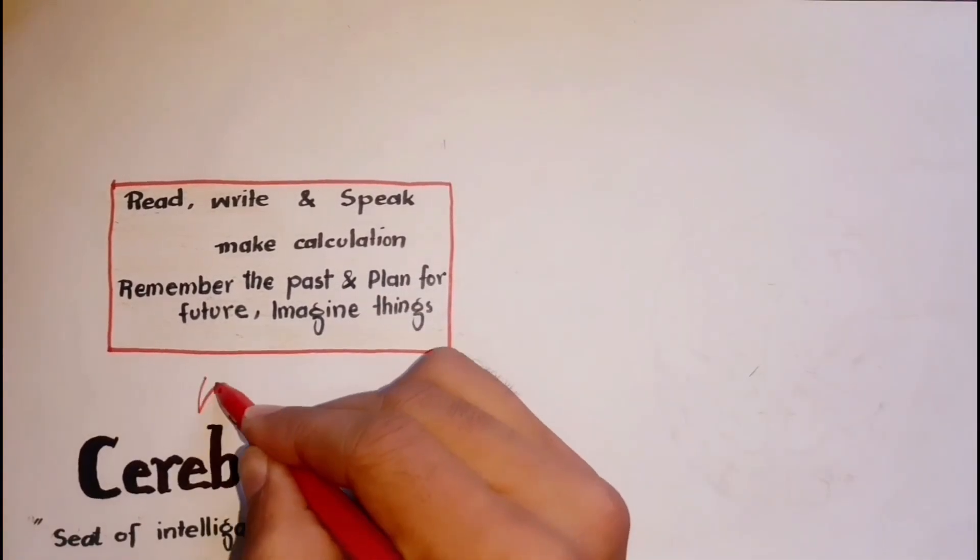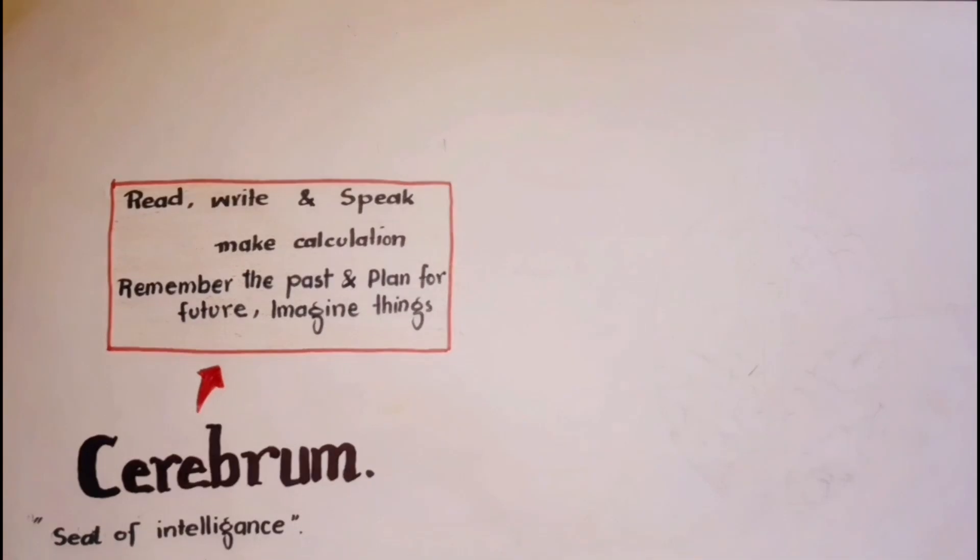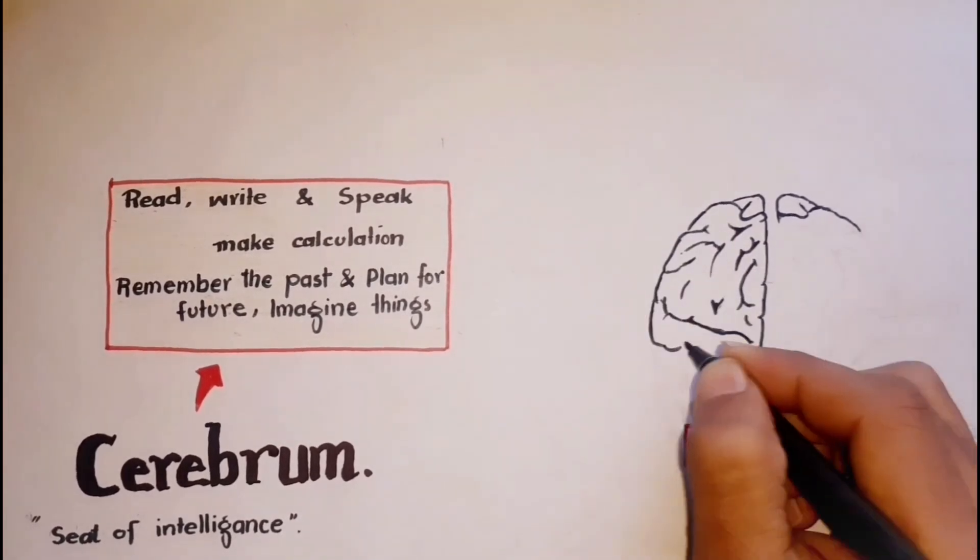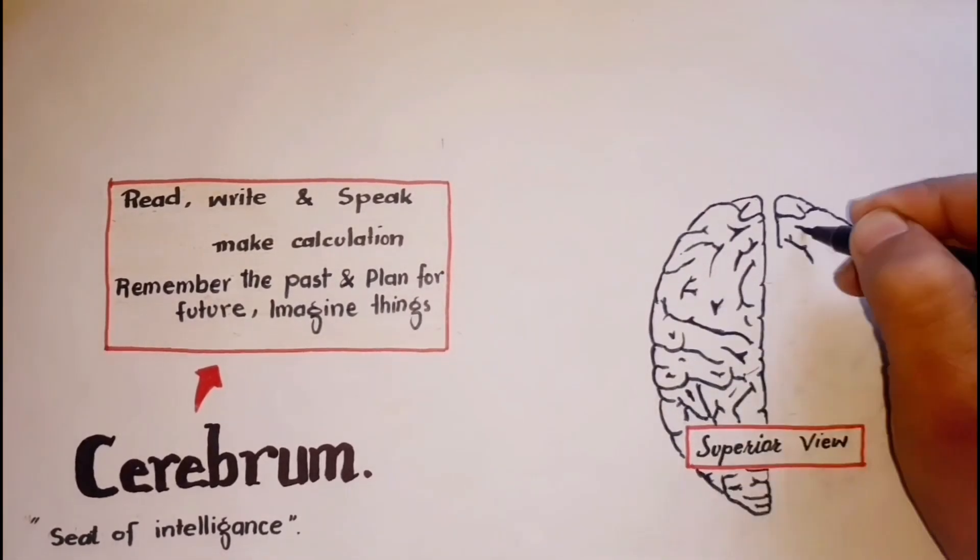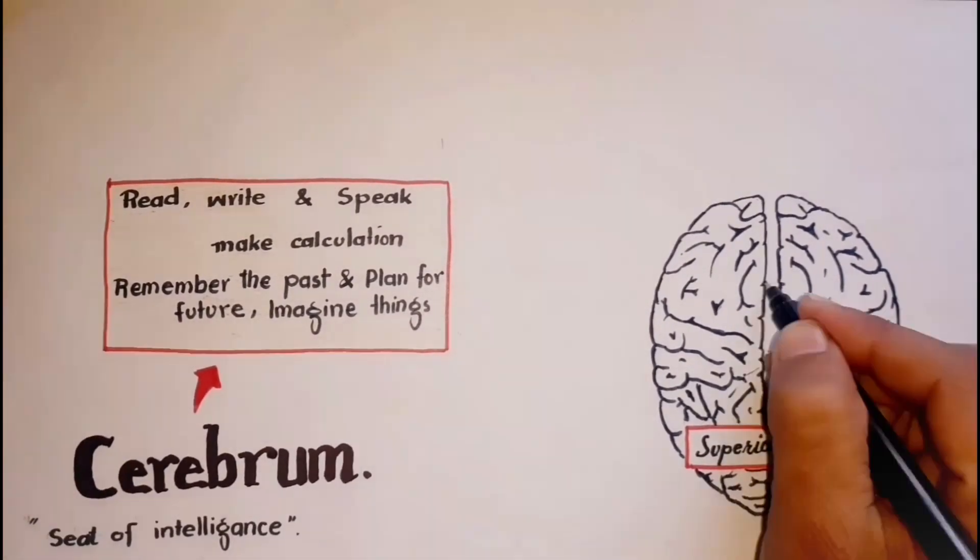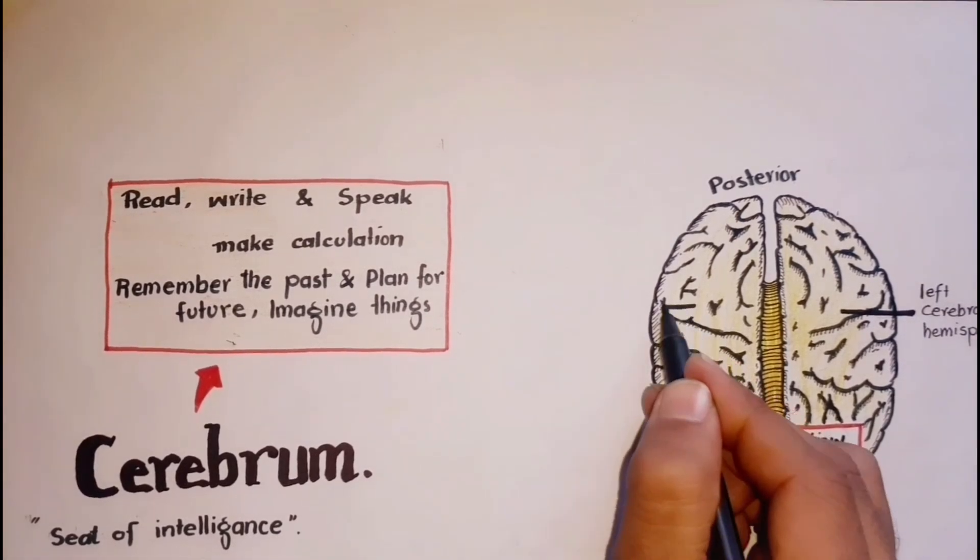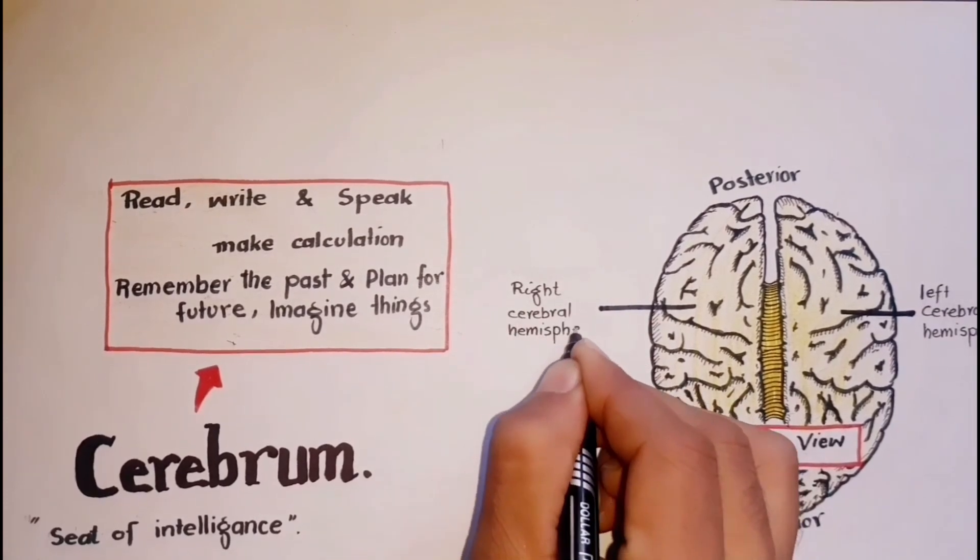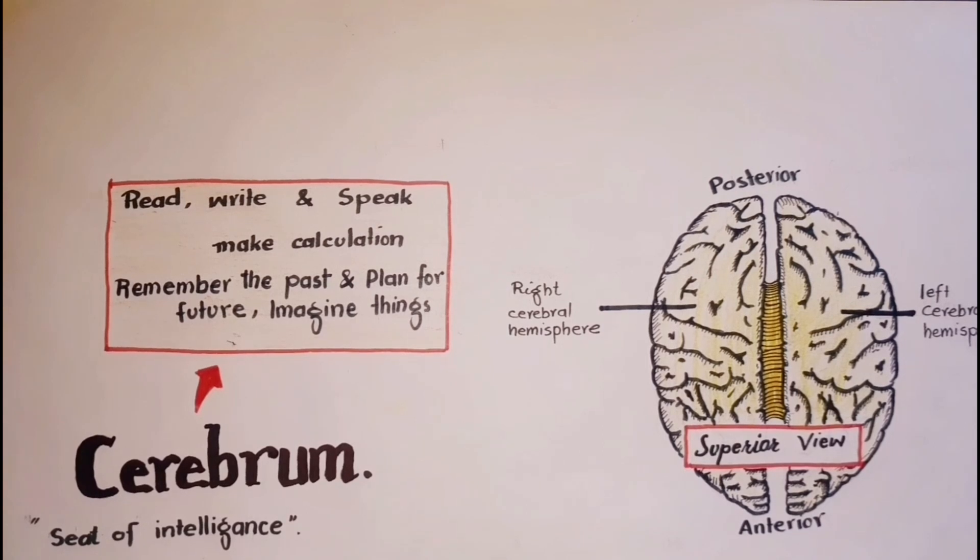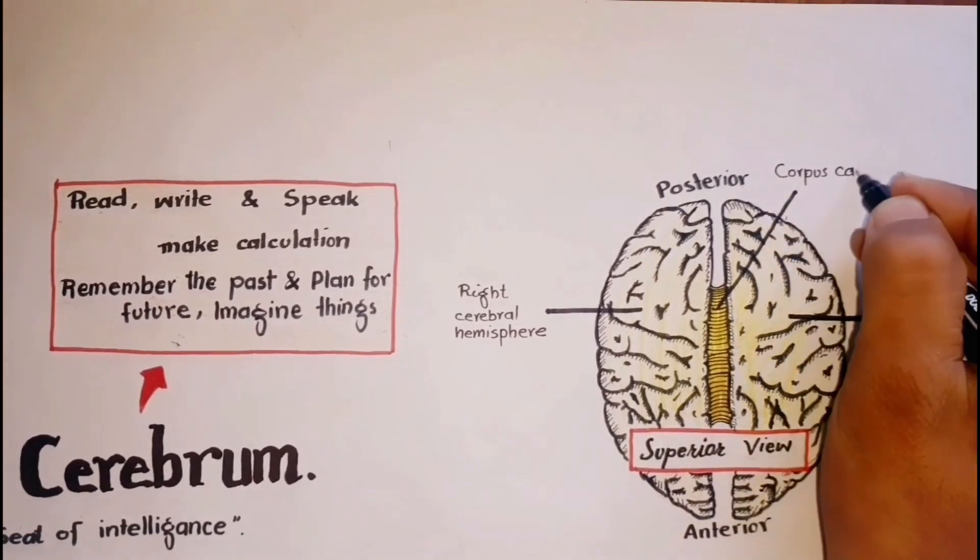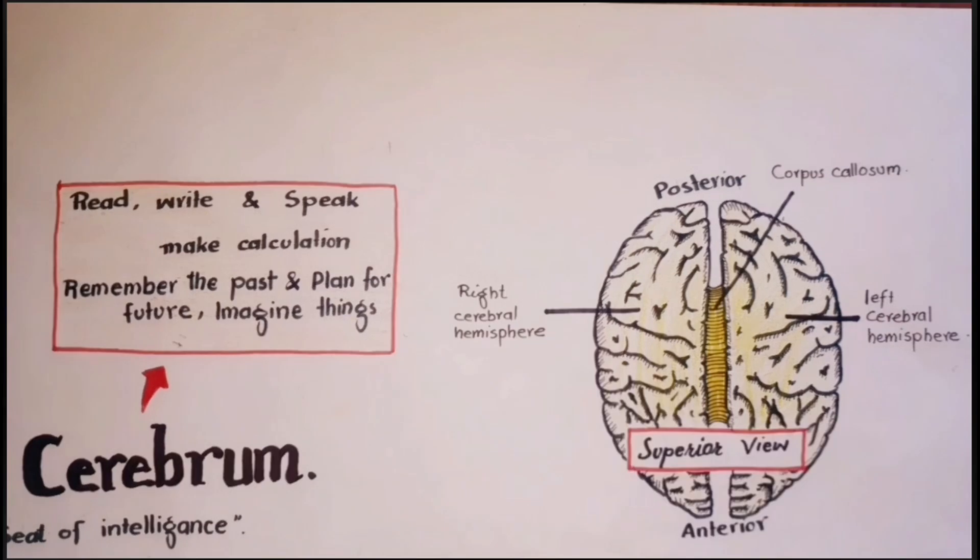The cerebrum accounts for about 80% of the brain's mass and consists of two large parts. Here I'm drawing the superior view of the brain. This is your left cerebral hemisphere and this is the right cerebral hemisphere, which are essentially mirror images of each other. A bundle of axons called the corpus callosum connects the two cerebral hemispheres to one another.